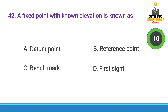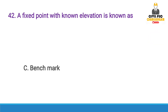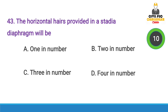Next question: A fixed point with a known elevation is called — Answer option C, Benchmark.